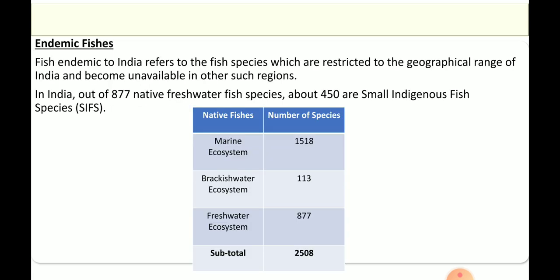Next, moving to endemic fishes. These are species specialized to one restricted area or geographical range. As we are living in India, fishes which live within the geographical range of India are called endemic fishes. In India, out of 877 native freshwater fishes, about 450 are very small indigenous fishes.